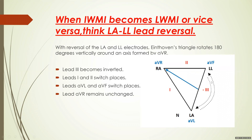What happens is you flip this triangle by 180 degrees — you turn the triangle around. In that case, aVL becomes aVF, aVF becomes aVL, lead 1 becomes lead 2, lead 2 becomes lead 1, and lead 3 becomes inverted. So: lead 3 becomes minus-lead 3 (inverted); leads 1 and 2 switch places; aVL and aVF switch places; and aVR remains unchanged.